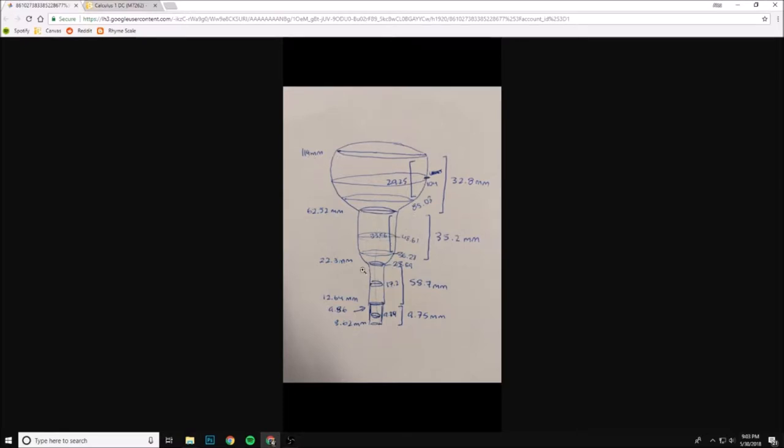The first step in calculating this is that we need to break down these parts into different functions so we can find the volume of that certain function. Now, what a lot of groups did was that they decided to break down this vase into multiple different quadratic functions like right here and right here and right here and right here. The problem with doing this is that it's extremely hard to find a quadratic regression line for each of these curves.